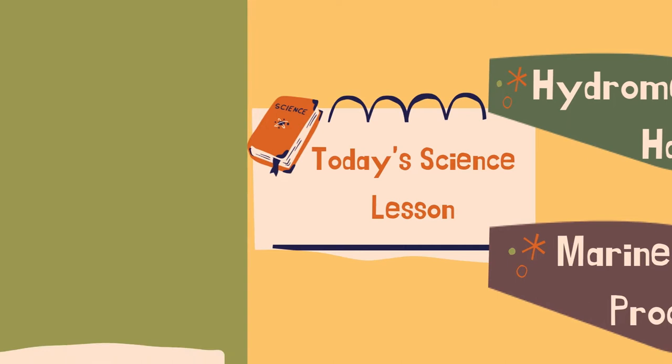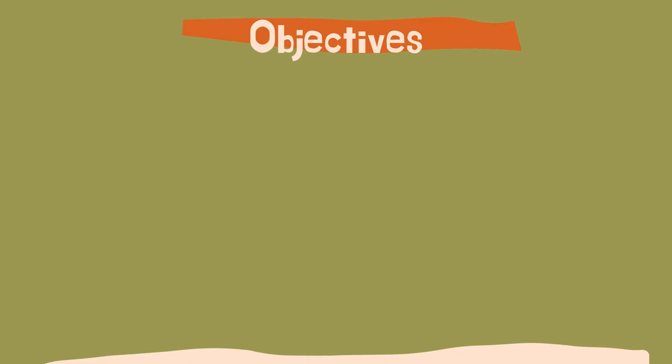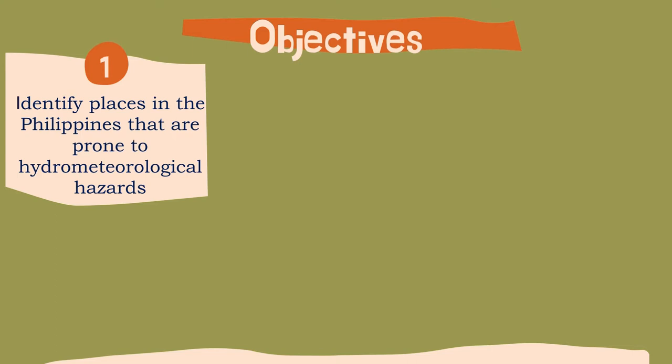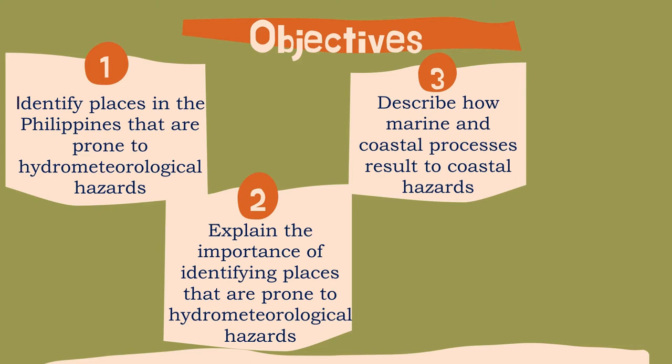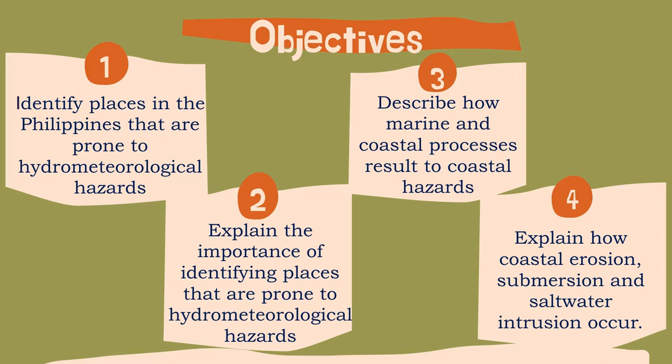As we go through these lessons, you are expected to attain the following. First, identify places in the Philippines that are prone to hydrometrological hazards. Second, explain the importance of identifying places that are prone to hydrometrological hazards. Third, describe how marine and coastal processes result in coastal hazards. And fourth, explain how coastal erosion, submersion, and saltwater intrusion occur.